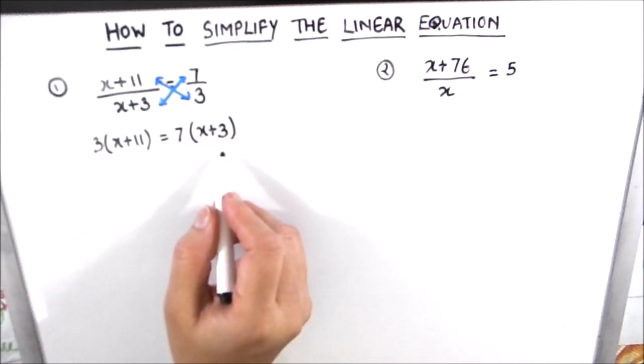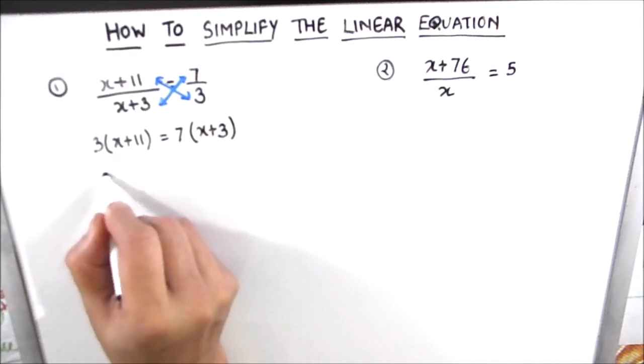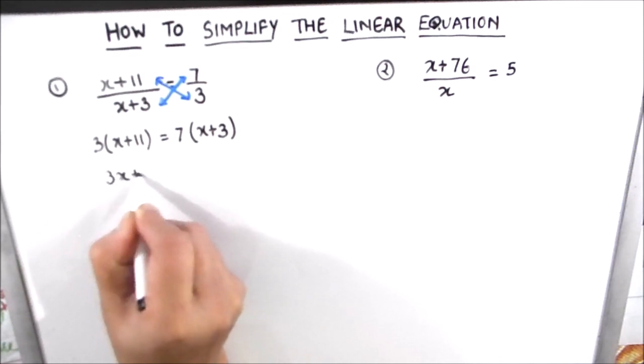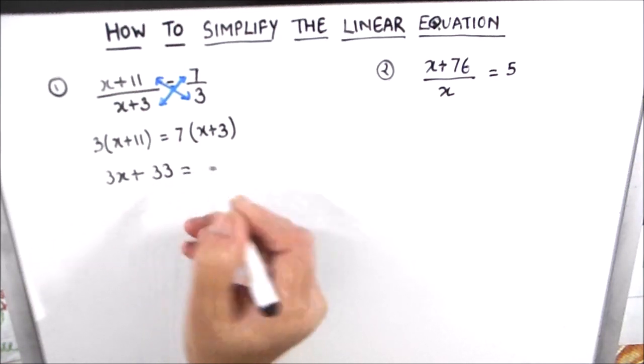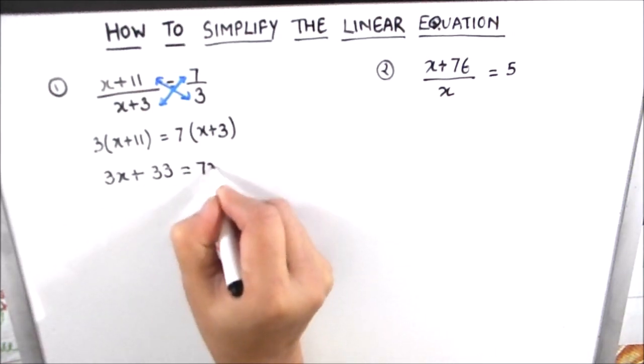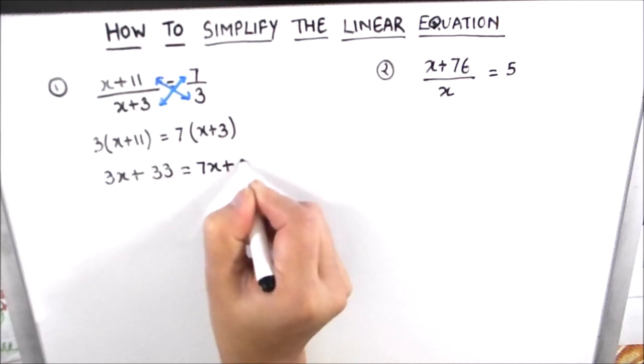Now we can distribute and solve this. So 3 times x is 3x plus 3 times 11 is 33 is equal to 7 times x is 7x plus 7 times 3 is 21.